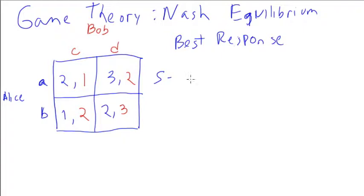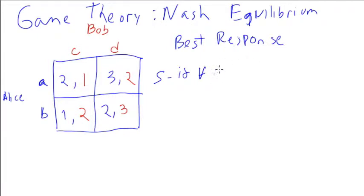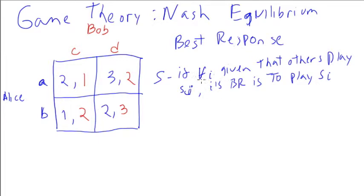A strategy S is in a Nash equilibrium if, for all players, given that everybody else is playing their Nash equilibrium strategy, each player's best response is to also play the Nash equilibrium. In other words, given that all other agents play their Nash equilibrium, agent I's best response is to play their Nash equilibrium too. It's an equilibrium by definition.